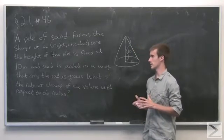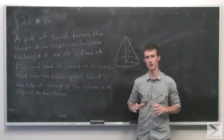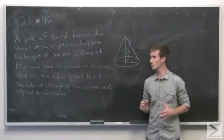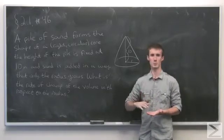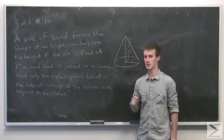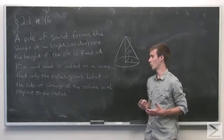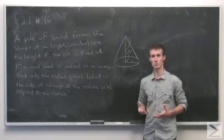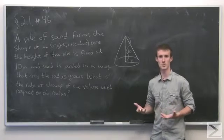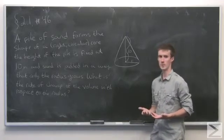We're assuming that we're adding sand in a way such that only the radius of the cone is changing. In other words, as we add more sand, the height is still fixed at 10 meters. And we want to know what is the rate of change of the volume of the cone with respect to the radius.